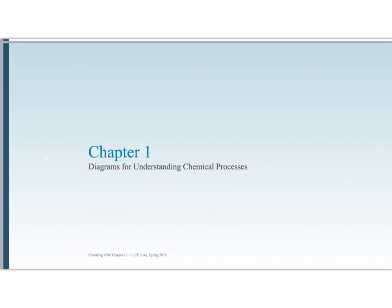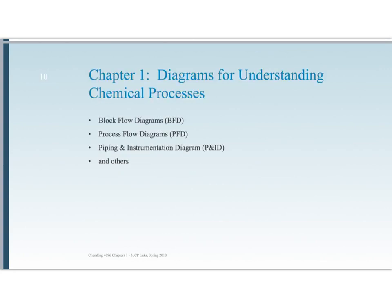In this lesson, we're going to be starting to look at Chapter 1, which is Diagrams for Understanding Chemical Processes. What we're going to go over in this lesson is block flow diagrams and process flow diagrams. The chapter will also look at P&IDs and some other types of diagrams, but we're going to stop at the two that you have done in the past, and then we will have time in class to look in more detail at P&IDs and other diagrams.